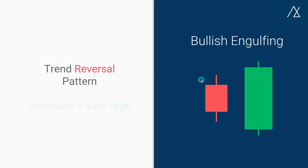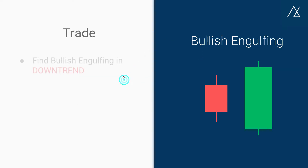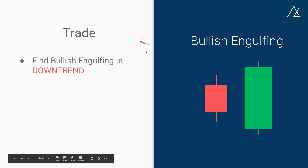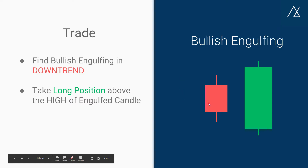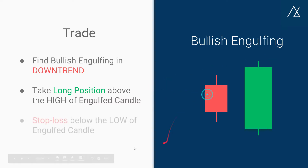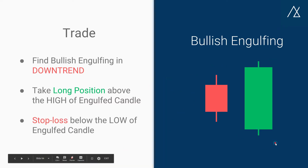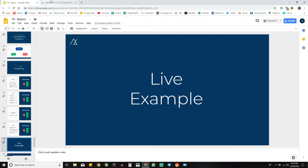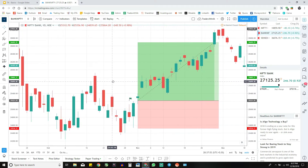It is a trend reversal pattern and the reliability is very high. I personally use this pattern for trading — it is a cherry on top for my trading strategies. You can use it, but paper trade first and use it with prudence in your trade setups. To take the trade: find a bullish engulfing pattern in a downtrend, take a long position above the high of the engulfed candle, and keep a stop loss below the low of the engulfed candle.